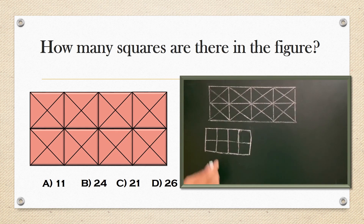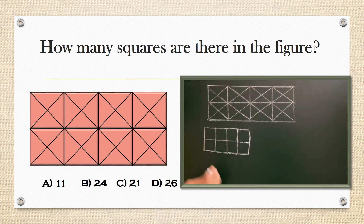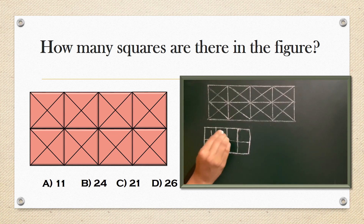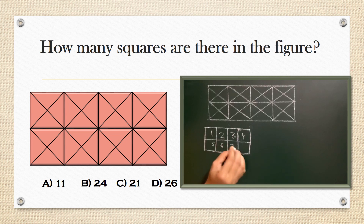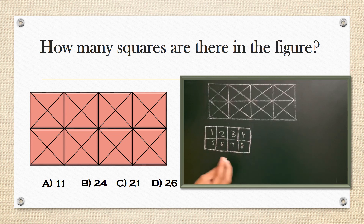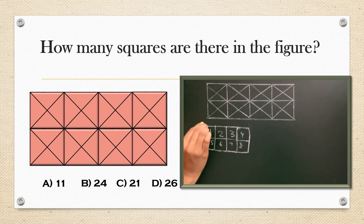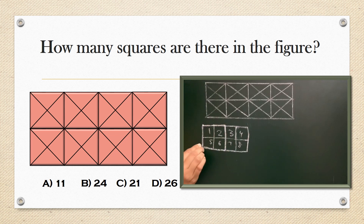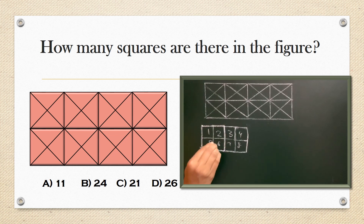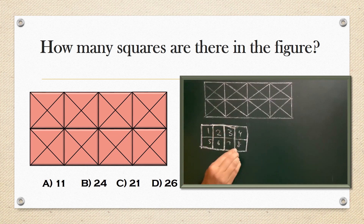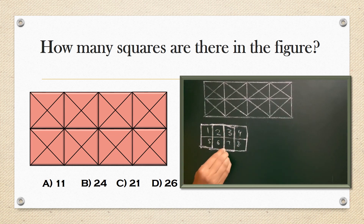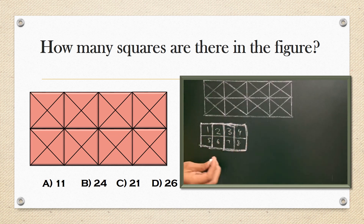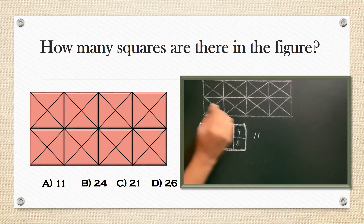Squares in this figure. Let's take this example: 1, 2, 3, 4, 5, 6, 7, 8, then these 4 together make 9, this is 10, 11. So there are 11 squares in this figure.